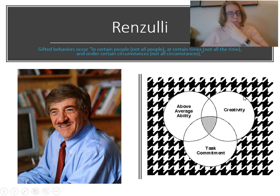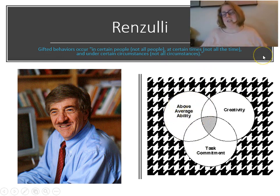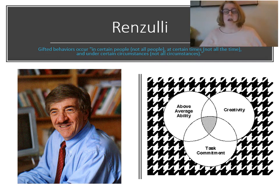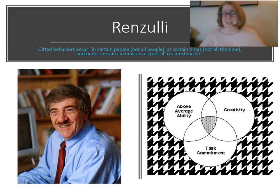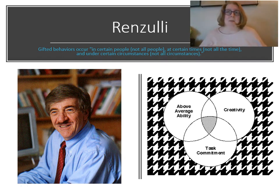This corresponds to the three-ring model. Gifted behaviors happen when we have a person of above-average ability — he defines this as maybe the top 20% rather than top 5% or 2% like other definitions. Also creativity: the elite people in any field have an ability to think about ideas in a different way, not just doing things better but thinking more creatively. And task commitment: being engaged with the task to complete it. Gifted behaviors happen when all three of these things work together, and this helps us think about the environment conducive to eliciting these behaviors.